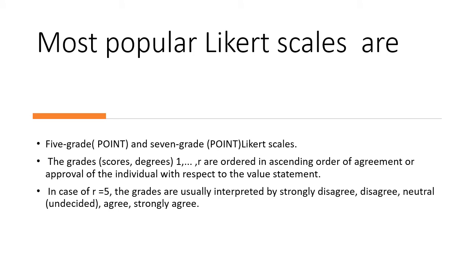The most popular Likert scales used in social sciences are the 5-point or 7-point Likert scales. The grade scores from 1 to R are ordered in ascending order of agreement or approval. In the case of R equal to 5, the grades are interpreted as: strongly disagree (1), disagree (2), neutral or undecided (3), agree (4), and strongly agree (5).